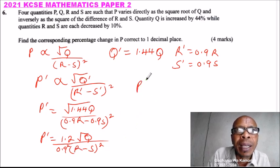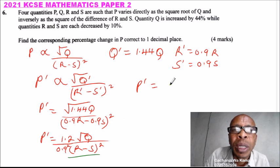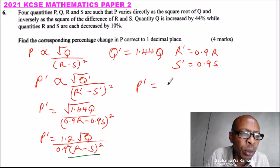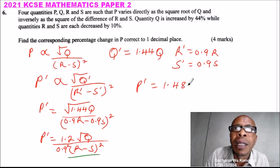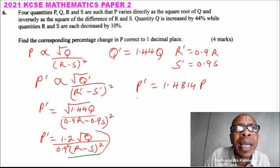This new P equals what we have here, which is actually the old P multiplied by a factor. If you divide 1.2 by 0.81, you'll get 1.481. This represents the new P, so you can see the difference. P increased.